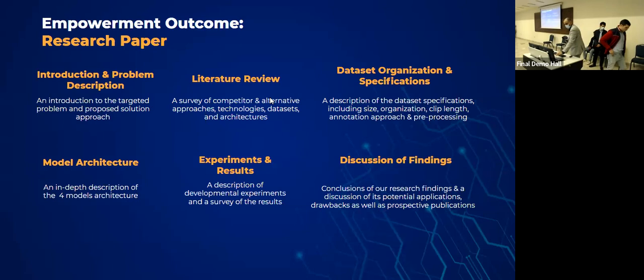As we mentioned, our empowerment outcome is a research paper. Let me guide you through the main sections of our research paper. First of all, we have the introduction and the problem description section. This section includes an introduction to the targeted problem, as well as a brief description of the solution proposed. Second, we have the literature review. This section discusses all the previous solutions to our problem, including datasets used, the architecture of the model design, and all alternative approaches and technologies to solve the problem.